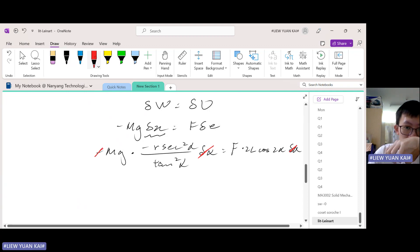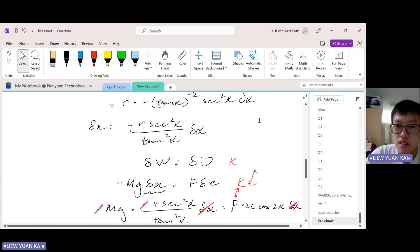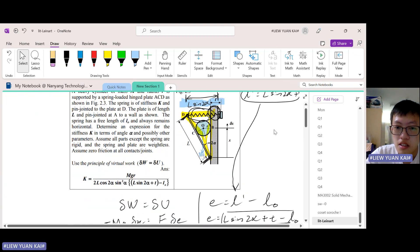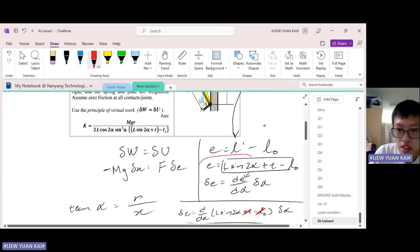Now what else can we do? So this minus can cancel. Now we have to make K the subject. But where is K? Actually K is inside here, right? Because the spring force is given by KE. And then we know that E, we found the expression for E earlier.